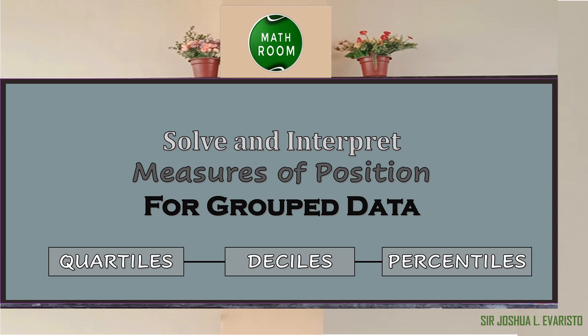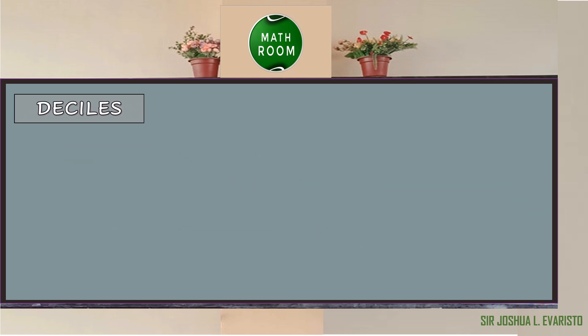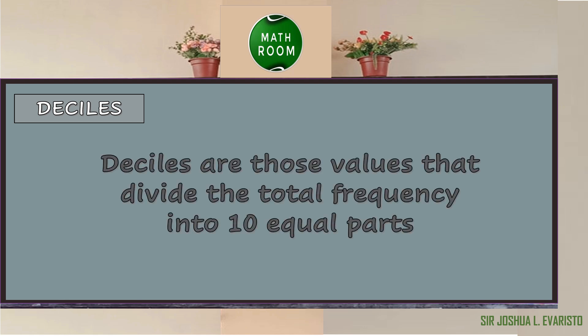In our previous lesson, we learned how to solve and interpret quartiles for group data. This time, we will discuss how to solve and interpret deciles for group data. But before that, let us review what deciles are. Deciles are those values that divide the total frequency into 10 equal parts.